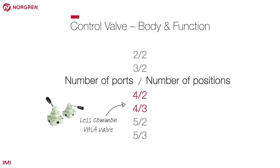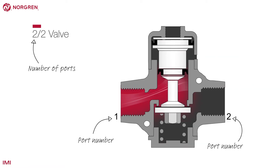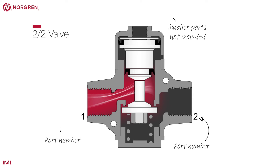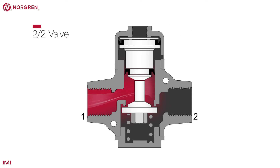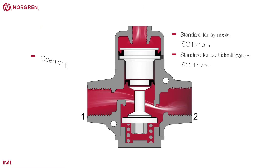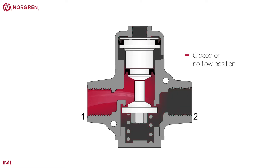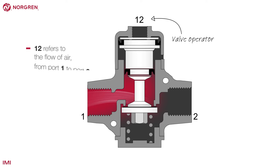They are commonly displayed like this. The first number represents the number of ports on a valve. Only the ports on the main body are counted; the smaller ports on a pilot valve, for example, are not included. This is a 2-2 valve — it has two ports and two positions. Port 1 is the inlet or supply, port 2 is the outlet or output. This is a standardised numbering system. The operation of the valve is also indicated by a number — in this case it's 1-2, which refers to the flow of air from port 1 to port 2.